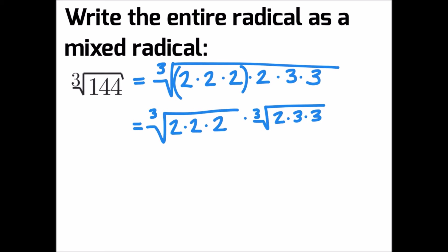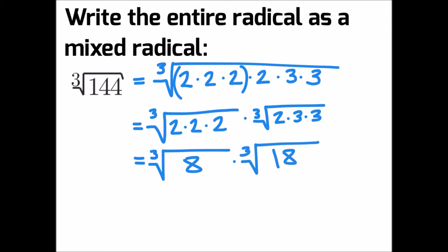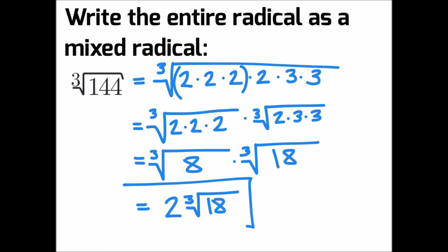We can rewrite the first radical as the cubed root of 8 multiplied by the cubed root of 18. And we can simplify to get a final answer of 2 times the cubed root of 18.